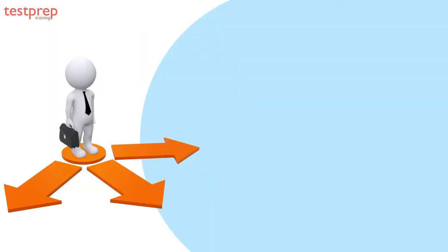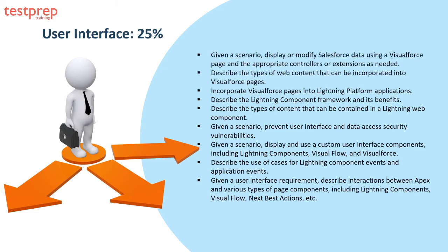Domain 4 is User Interface, which comprises 25% weightage in the exam. This covers nine areas, including: given a scenario, display or modify Salesforce data using a Visualforce page and the appropriate controllers or extensions as needed; describe the types of web content that can be incorporated into Visualforce pages; incorporate Visualforce pages into Lightning platform applications; describe the Lightning component framework and its benefits; and describe the types of content that can be contained in a Lightning web component.